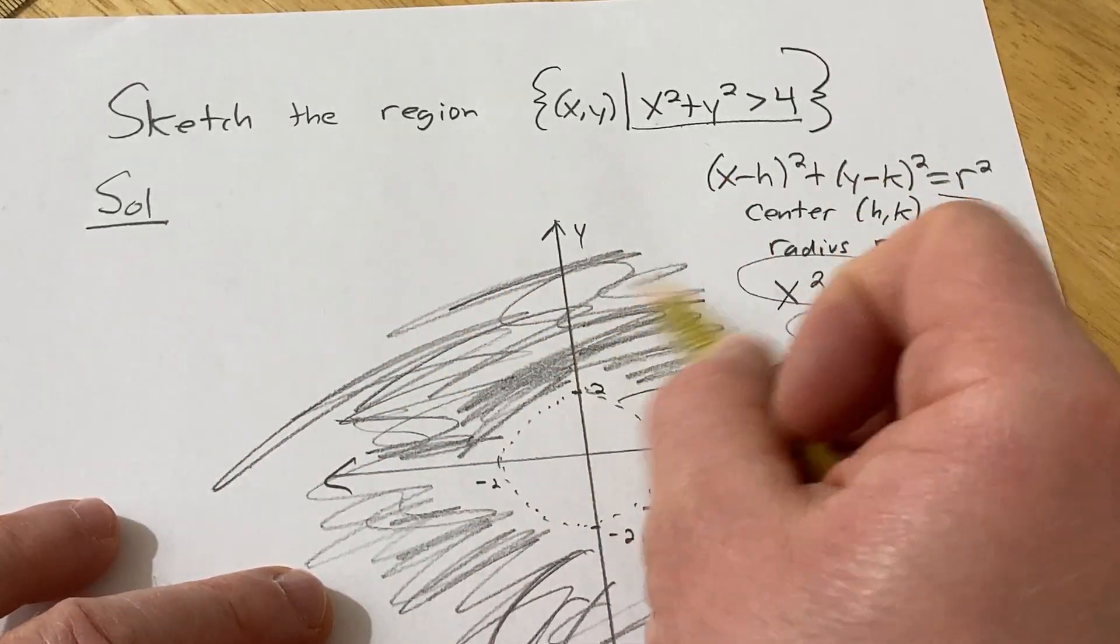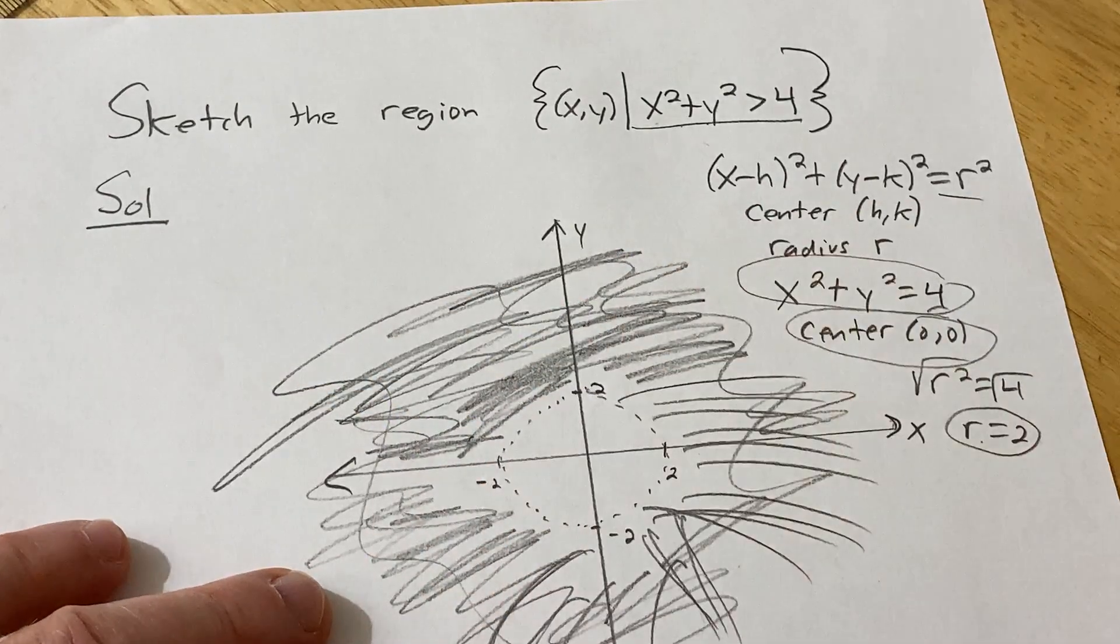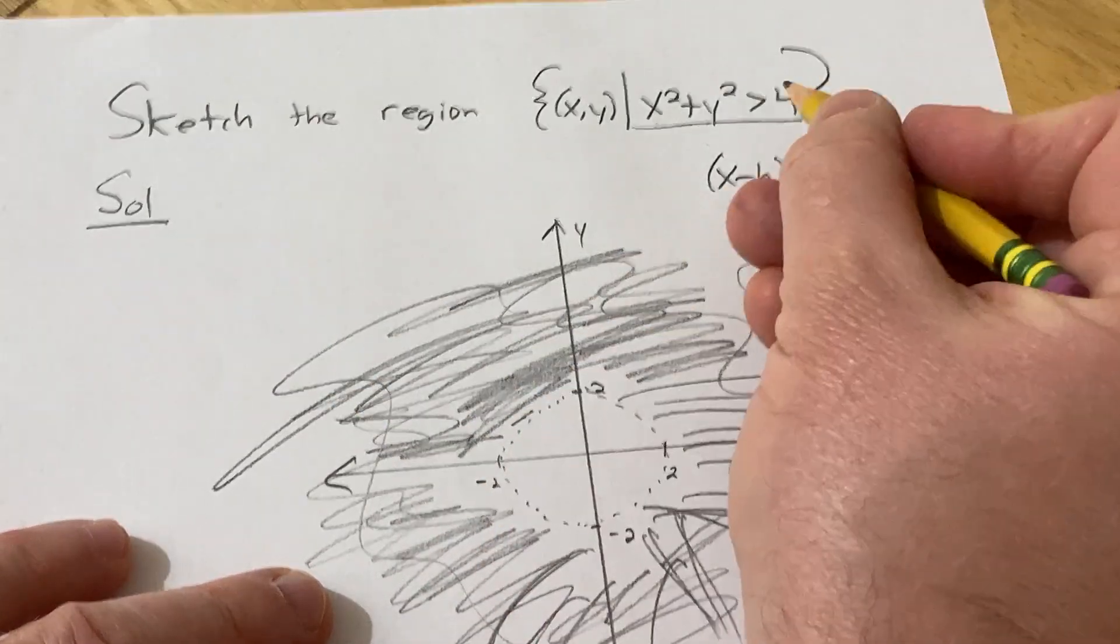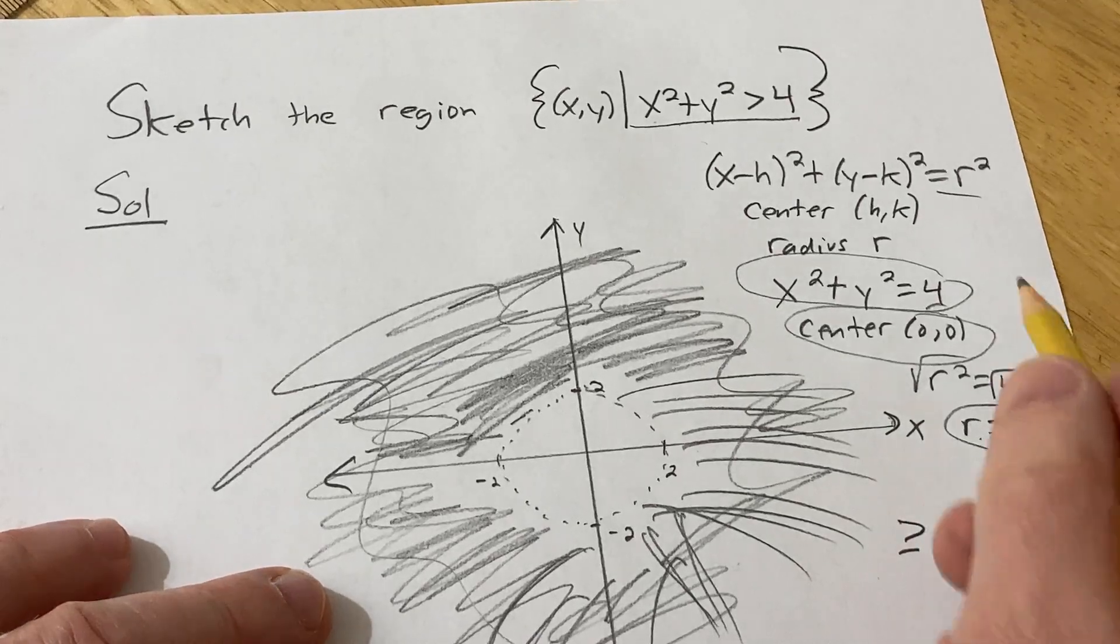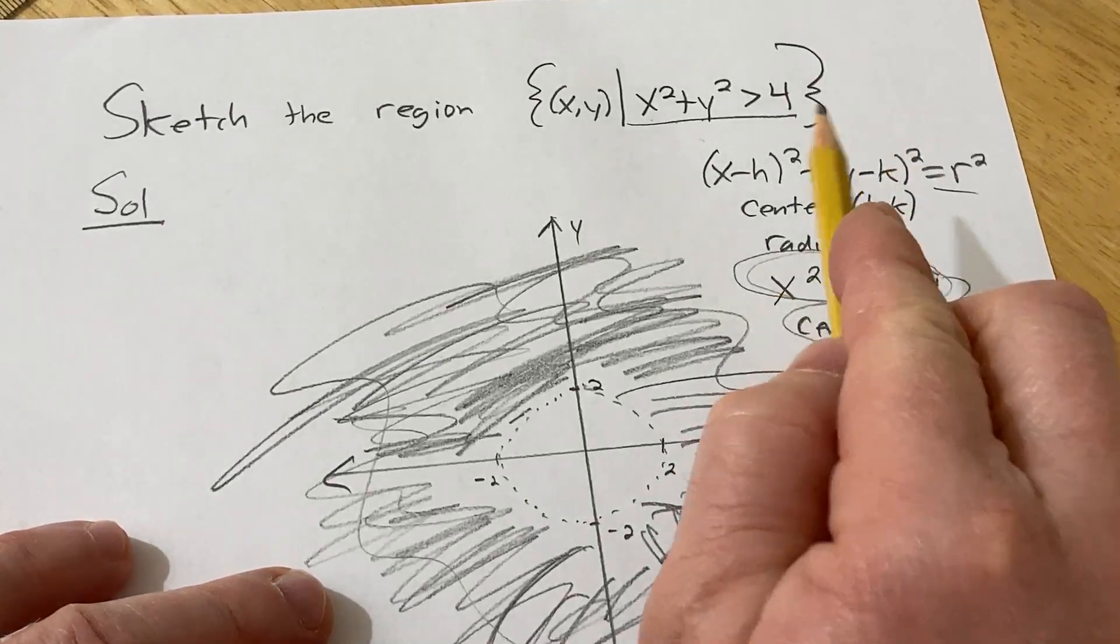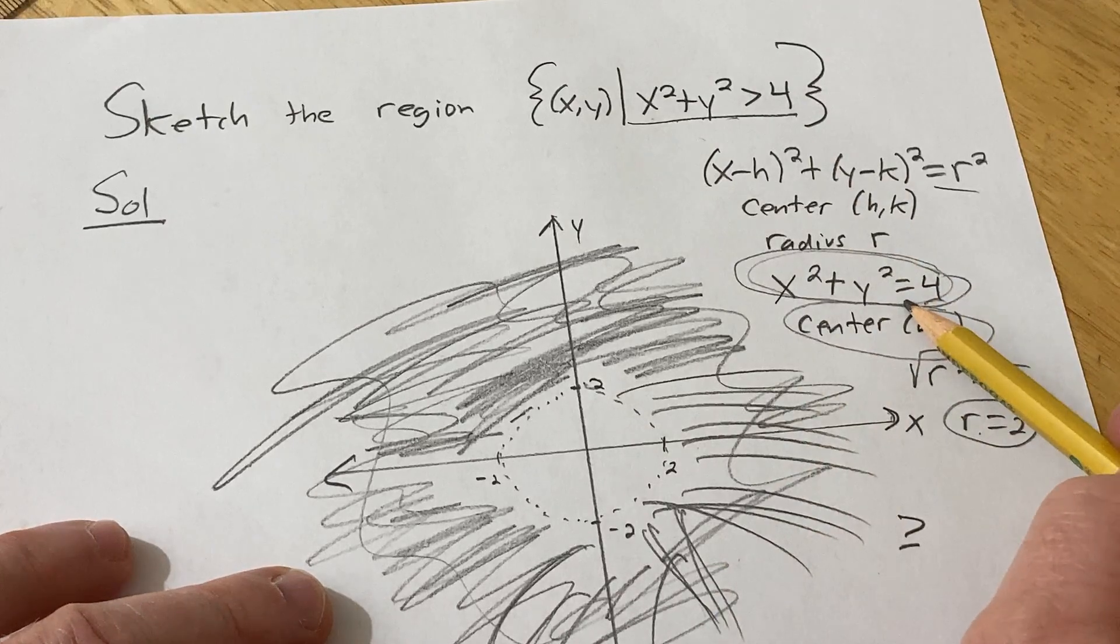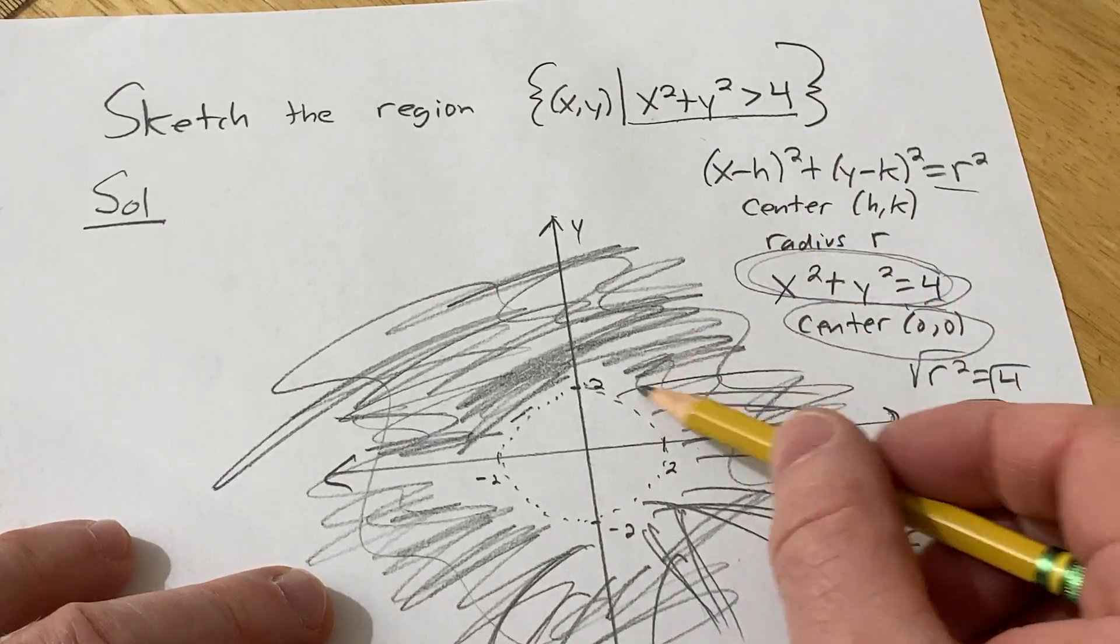And the reason the line is dotted is because if it was greater than or equal to, it would be solid because we include the circle. But because it's greater than 4, we're not including the circle. So it's basically everything outside of the circle.